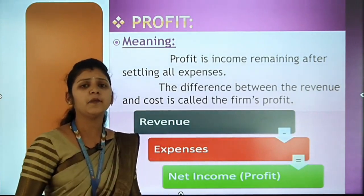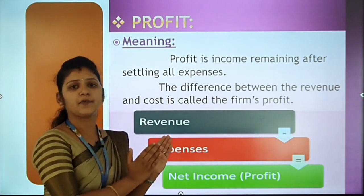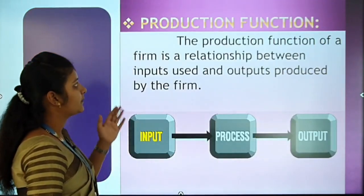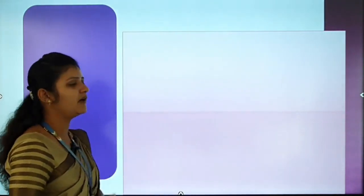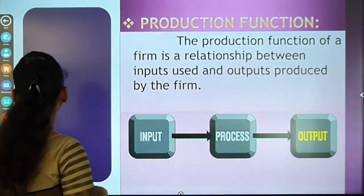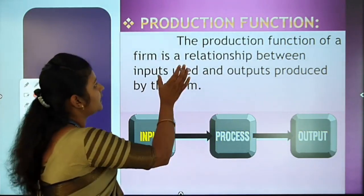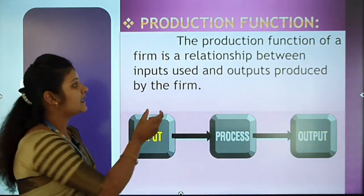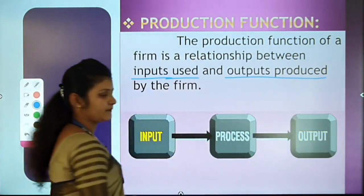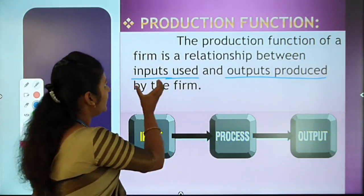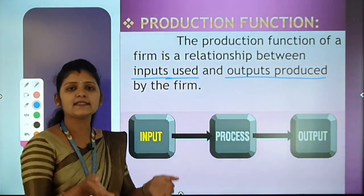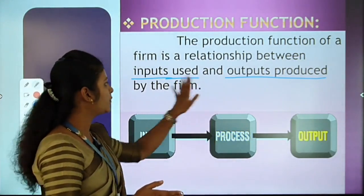These four concepts — production, cost of production, revenue, and profit — are very important to understand the whole chapter on production and cost. Now, moving to our main content: the production function. The production function of a firm is a relationship between inputs used and output produced. It tells us the relationship between inputs used in production and the outputs produced by the firm.